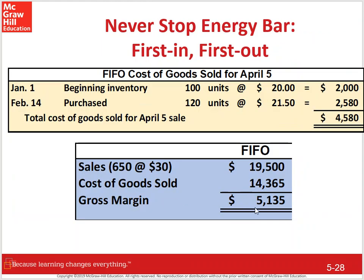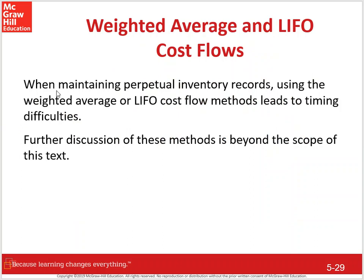Under LIFO, when you sell 220 units in April, it's NOT the most recent 200 from February plus 20 from beginning inventory. It's truly the last ones in for the whole period — which could include September purchases. You wouldn't know your COGS until the end of the year. Similarly, weighted average must be computed over the entire year including all purchases. These timing difficulties mean you'll only be asked to do intermittent examples under FIFO. Further discussion of LIFO and weighted average perpetual methods is beyond the scope of this text.